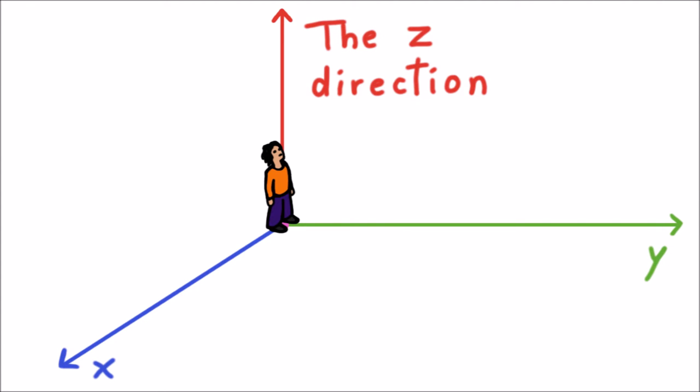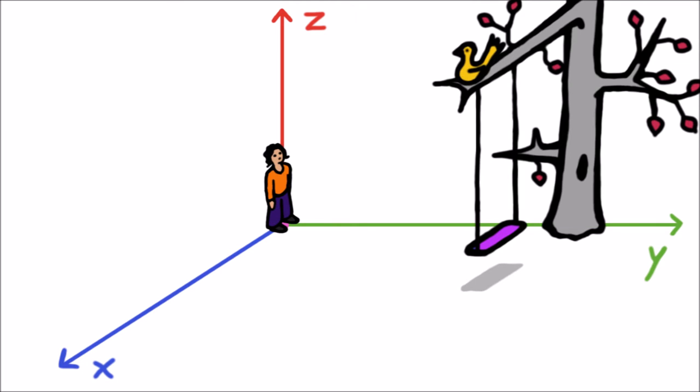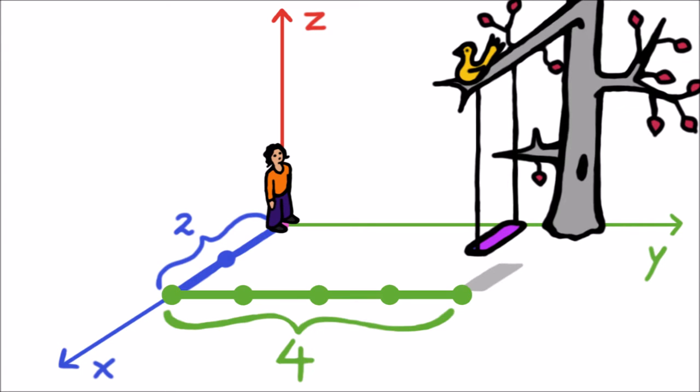With this understood, we can now specify any point in this universe by naming three numbers. These numbers are like a set of instructions for getting from the spawn point to the point in question. The first number says how far you should go in the X direction, the second number says how far you should go in the Y direction, and the third number says how far you should go in the Z direction.